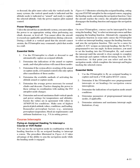Essential Skills: 1. Use the FD/autopilot to climb or descend to automatically capture an assigned altitude. 2. Determine the indications of the armed or capture mode, and what pilot actions will cancel those modes. 3. Determine if the system allows resetting of the armed or capture mode, or if manual control is the only option after cancellation. 4. Determine the available methods of activating the altitude armed or capture mode. 5. Determine the average power necessary for normal climbs and descents, and practice changing power in coordination with FD/autopilot mode changes. 6. Determine and record maximum climb vertical speeds and power settings for temperatures and altitudes, ensuring values agree with AFM/POH. Remember powerplant factors such as minimum powerplant temperature, bleed air requirements, and airframe limitations such as VA.